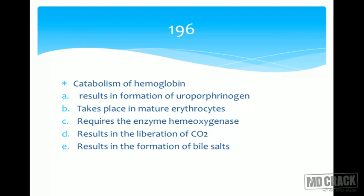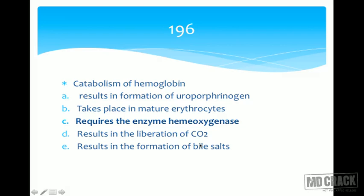Next question: catabolism of hemoglobin — which statement is correct? It requires the enzyme heme oxygenase. Uroporphyrinogen is a precursor in heme synthesis, not catabolism. Catabolism does not take place in mature erythrocytes — senescent RBCs must be taken up by the spleen and reticuloendothelial cells first. It results in liberation of carbon monoxide, not carbon dioxide. It forms bile pigments — biliverdin and bilirubin — not bile salts (bile salts come from cholesterol).